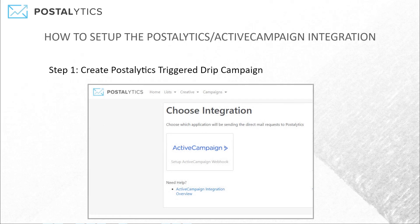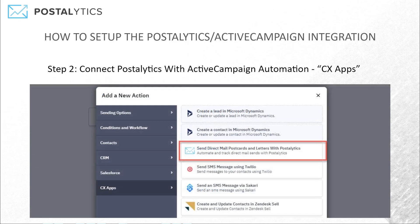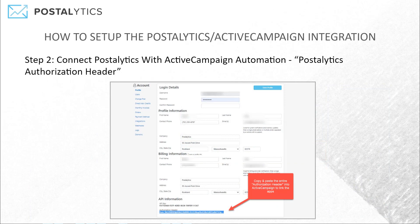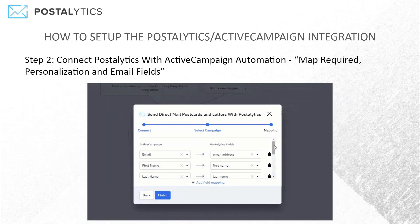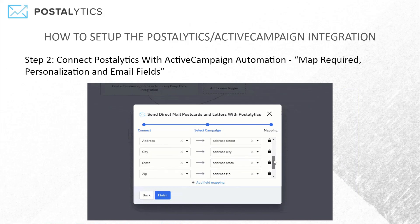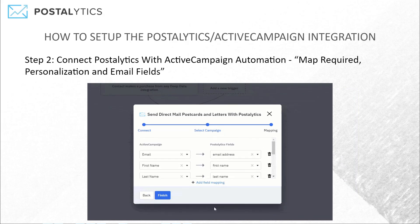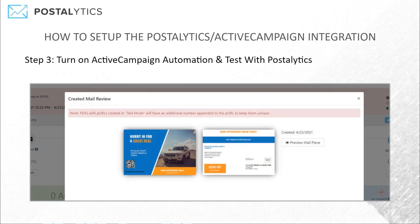The integration is easy to set up. First, you set up a campaign in Postalytics — we call it a Trigger Drip Campaign. Then you connect Postalytics with your ActiveCampaign account with a couple of steps: grab the CX Apps Postalytics app, grab the authorization header out of Postalytics and drop it in, pick the Trigger Drip Campaign you've set up, and map the data so we know how it flows from ActiveCampaign into Postalytics. You can then test by generating PDFs of the actual mail pieces to do a full round-trip test.